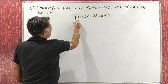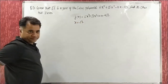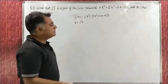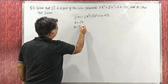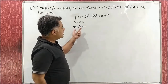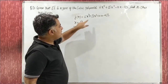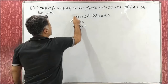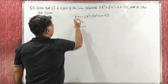Since x = √2 is a zero, we can easily form the factor. x − √2 = 0. We'll treat this as g(x) and divide p(x) by it. So we'll divide p(x) by (x − √2).